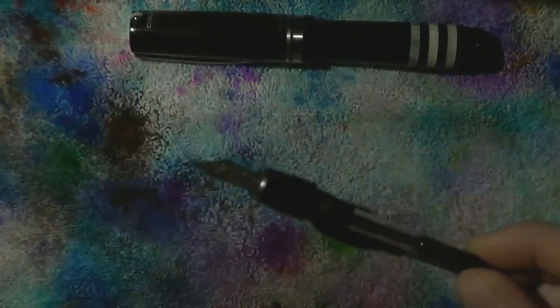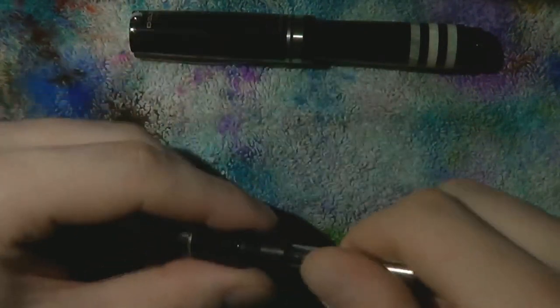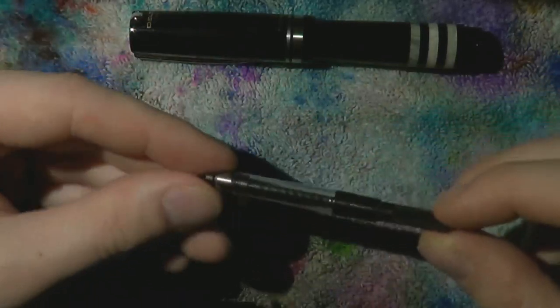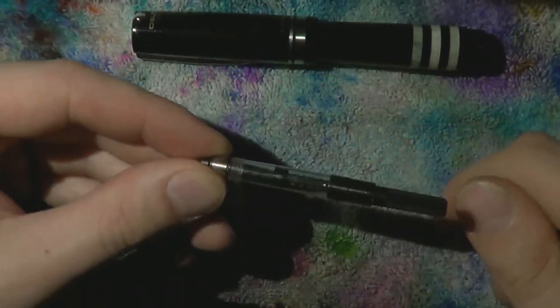What you're left with is the section, nib, feed and converter. In this pen, the converter screws out. But the beauty of this converter is, it can be disassembled.